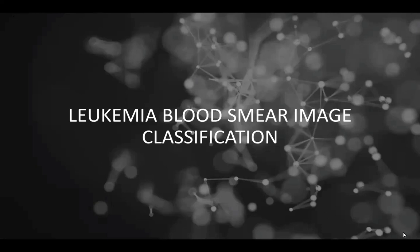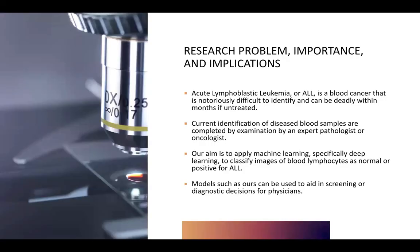Today we present the Leukemia Blood Smear Image Classification. Acute Lymphoblastic Leukemia, or ALL, is a blood cancer that is notoriously difficult to identify and can be deadly within months if not treated. Current identification of diseased blood samples is completed by examination of an expert pathologist or oncologist. Because machine learning models have been used in the medical field to aid in screening and decision-making for physicians, one use case is screening blood smear samples to differentiate between normal and ALL cells, especially due to the challenging nature of appropriately classifying them.